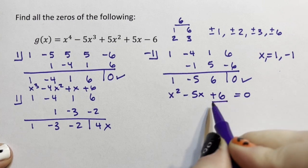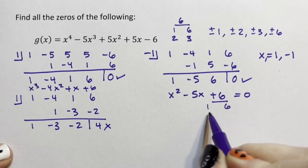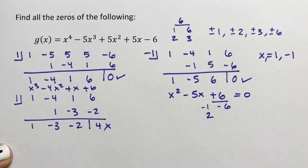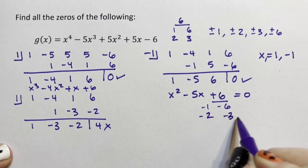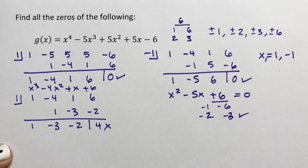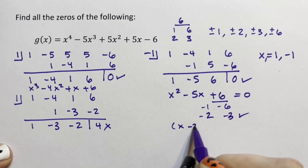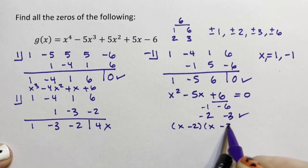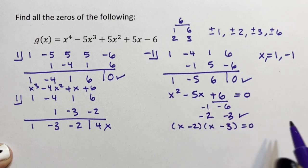So I need two numbers that multiply to positive 6 and add up to negative 5. So 1 and 6 is 7, 2... -1, -6, -2 and -3 however work. So we have (x - 2) times (x - 3).